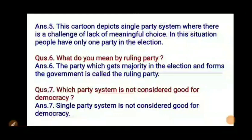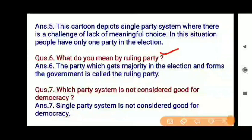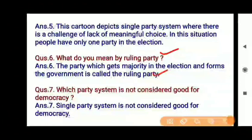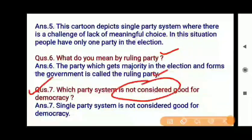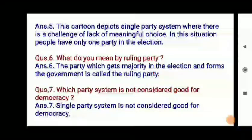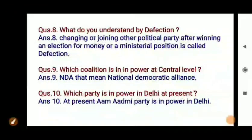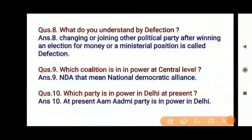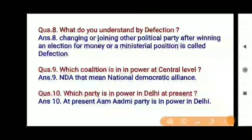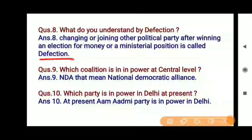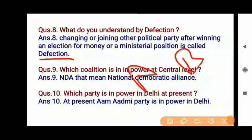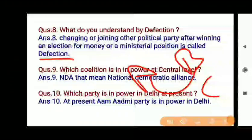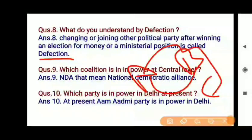Question 6: What do you mean by ruling party? The party which gets a majority in the election and forms the government is called the ruling party. Question 7: Which party system is not considered good for democracy? A single-party system is not considered good for democracy. Question 8: What do you understand by defection? Changing and joining another political party after winning an election for money or a ministerial position is called defection.